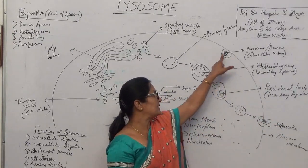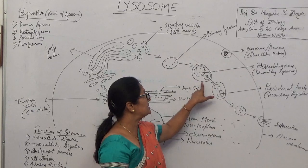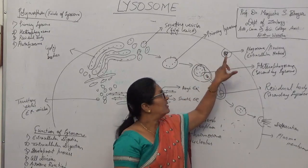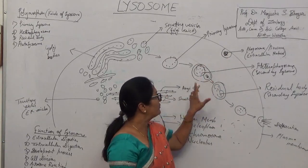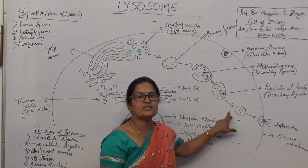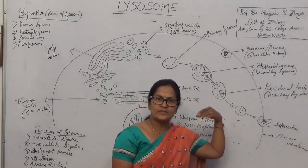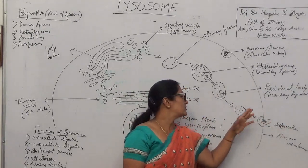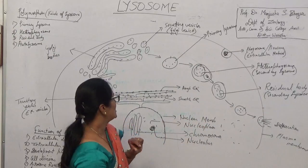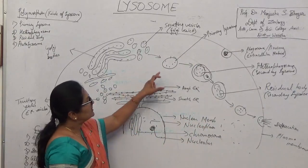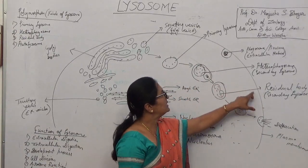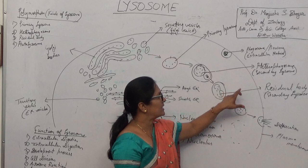When the food material enters inside the cell, it is called as endocytosis process. When the food material or nitrogen waste substances are thrown outside the cell, it is called as exocytosis process. So, these are the heterophagosome and residual body — these are the secondary Lysosome.